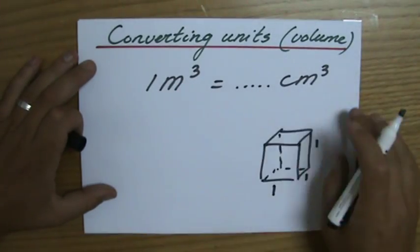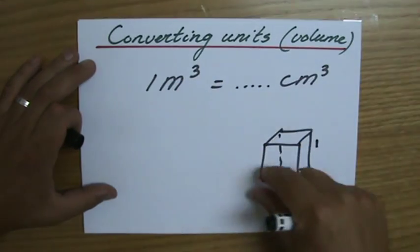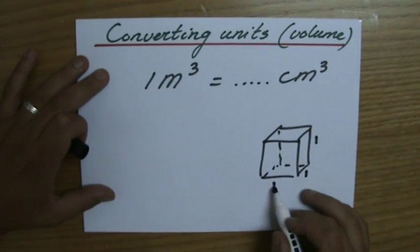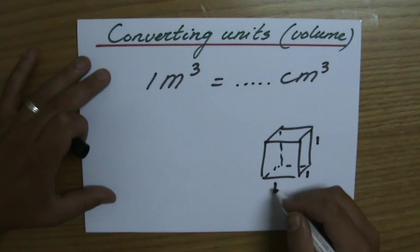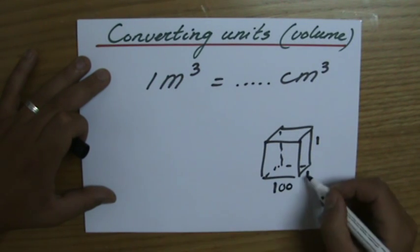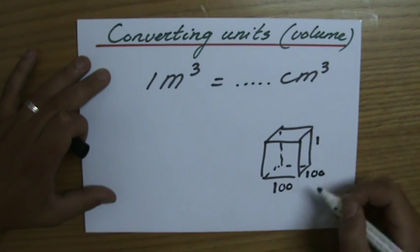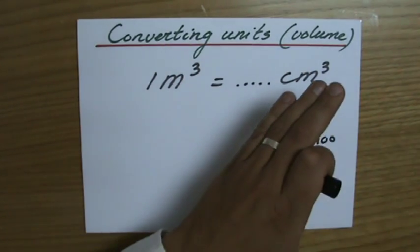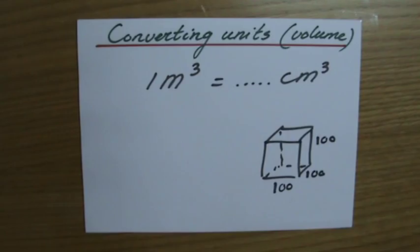So if they ask me now, how many centimeter cubes will fit in that meter cube? Then I convert each of these units. So one meter is 100 centimeters, one meter is 100 centimeters, and that's 100 centimeters. So to find the amount of centimeter cube in a meter cube,